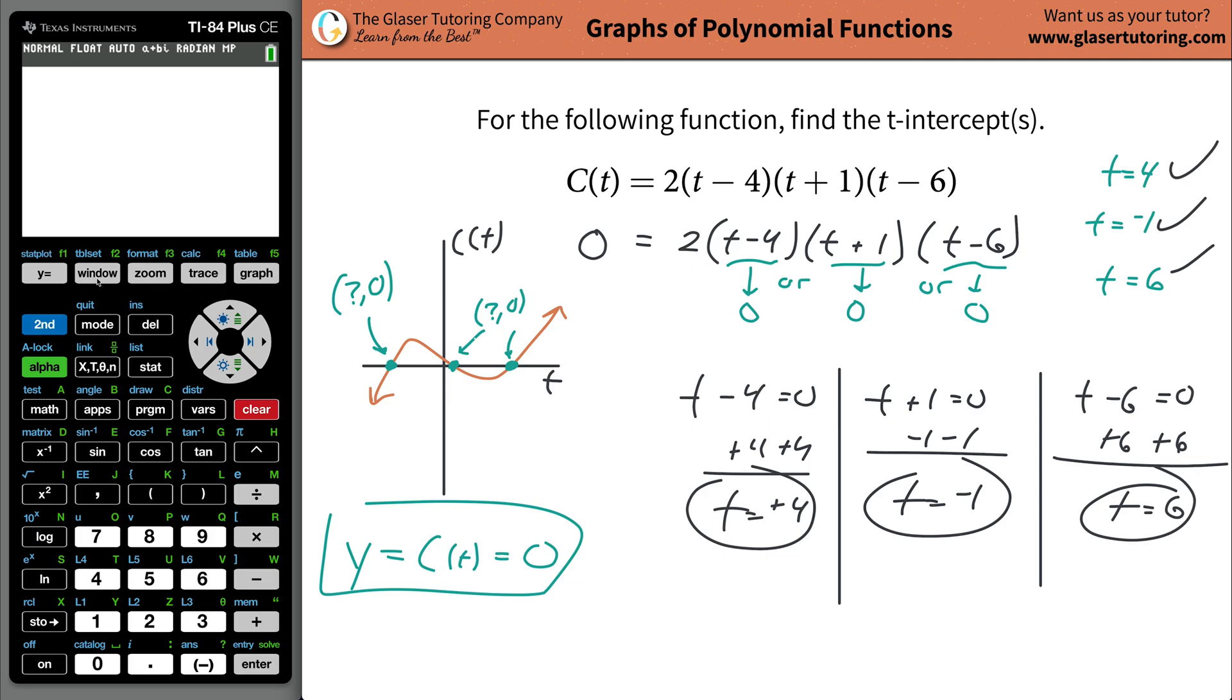That's all it is. Now you can go to your calculator and double check it if you want. So plug in the function two parenthesis T minus four. So in this case, we're not going to use, we're going to use X.